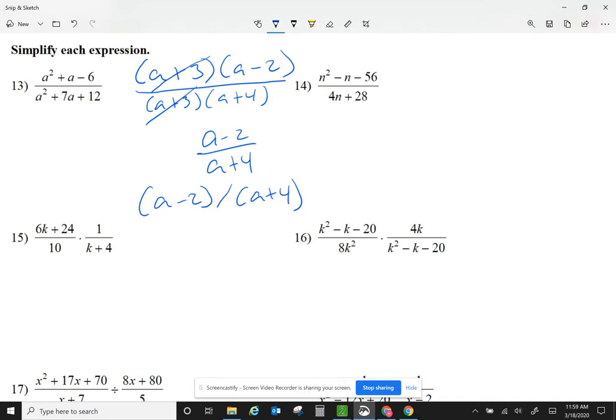Now let's take a look at number 14. I still have one fraction only. So let me factor the top. Let me get n minus 8, n plus 7. At the bottom, I only have two terms. I can see I can divide each by 4. So it gives me n plus 7.